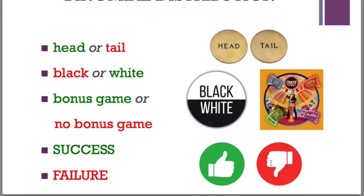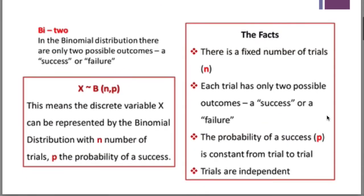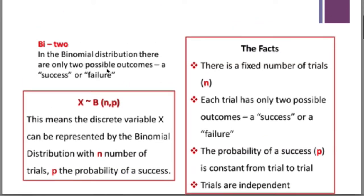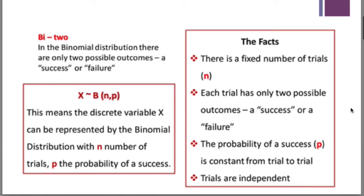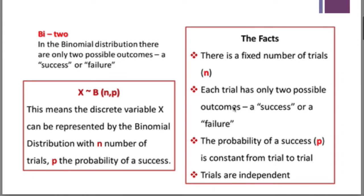Success and failure. So again, in the binomial distribution, there are only two possible outcomes - a success or a failure. Now each trial has only two possible outcomes, a success or a failure.